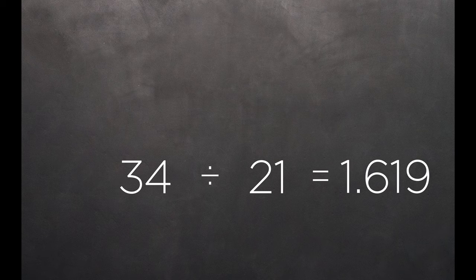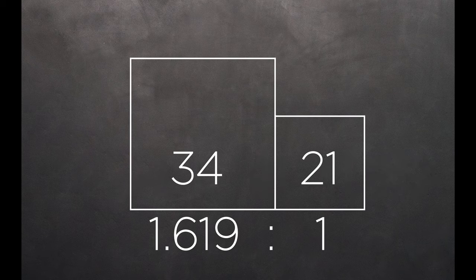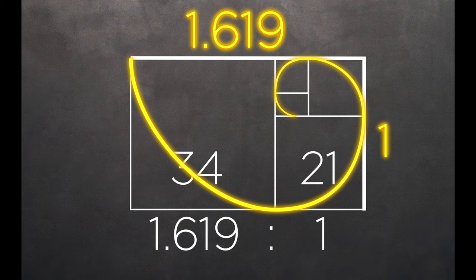When we take any two successive Fibonacci numbers, the ratio is very close to the golden ratio and can be visualized as a spiral.